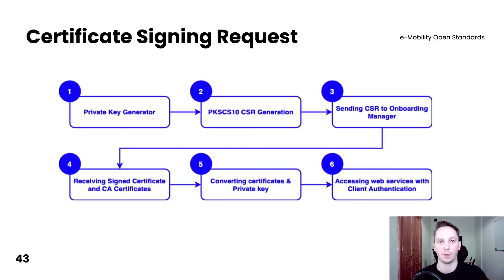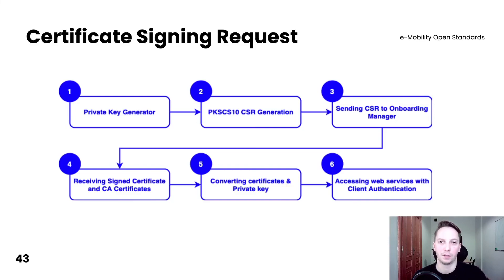Details of certificate signing request generation will be delivered to you during the pre-contract phase. First, you need to generate a private and public key in order to encrypt and decrypt messages. Then you need to generate a CSR with PKCS10 standards, send it to Hubject via email, and send the password for encrypted files through some other channel. The onboarding manager will verify everything and sign the certificates. In the QA phase you will receive a signed partner certificate together with CA certificates, convert them, and finally access web services with client authentication.